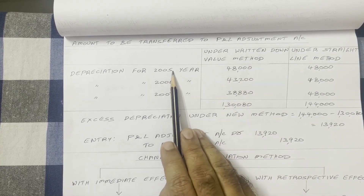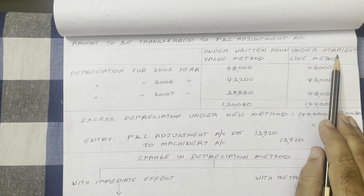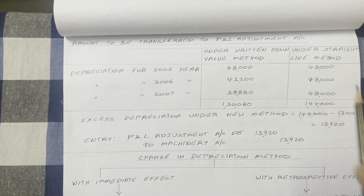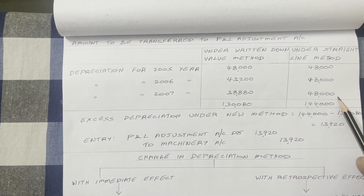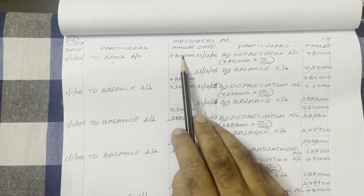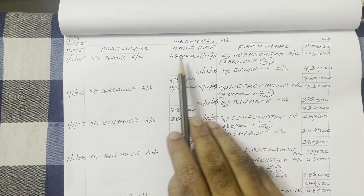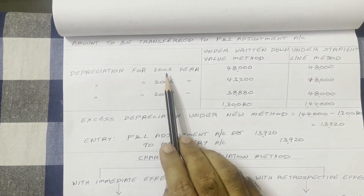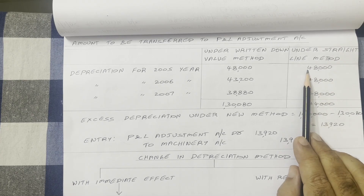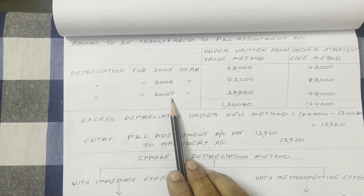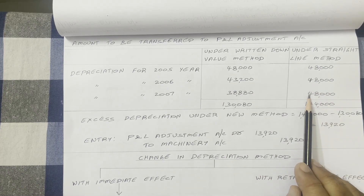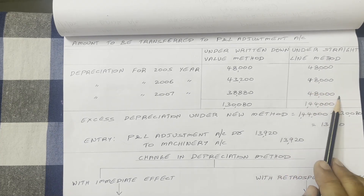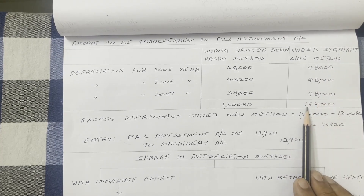Now, if we had provided depreciation from 2005 under straight line method, what would be the total depreciation for the first three years? Under straight line method, we provide depreciation on the original cost of the asset every year. First year: original cost is 4,80,000 × 10% = 48,000. In 2006 and 2007 also, depreciation is calculated on original cost only, not on opening balance. Therefore for 2006 and 2007, depreciation amounts are also the same — 48,000 each. Three amounts total: 1,44,000.